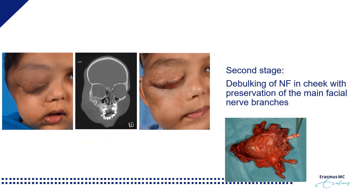The post-operative result shows a nice configuration of the orbit as illustrated on the x-ray. However, the most disappointing result is in the eyelid — it still remains too bulky and the child still cannot wear an orbital prosthesis. We performed a second stage of debulking the neurofibromatosis in the cheek. As this child still had good function of the corner of his mouth, we preserved as many branches of the facial nerve as possible, using a nerve stimulator during surgery to identify the functioning branches and remove only the bulk of the neurofibromatosis.